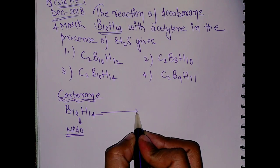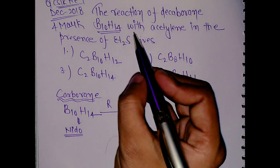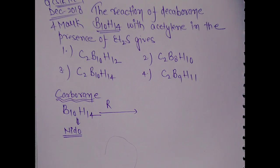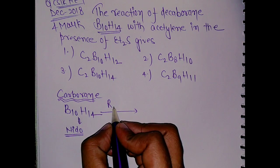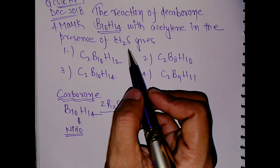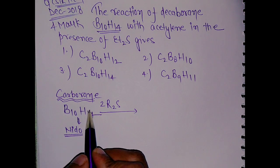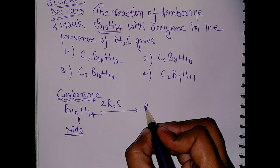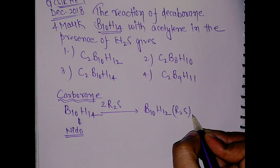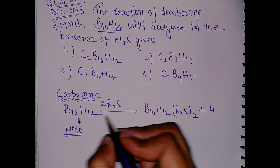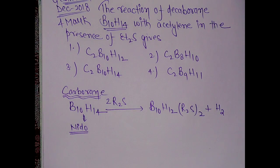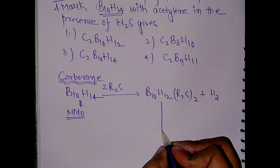Now, if we treat B₁₀H₁₄ with R₂S — I'm taking a general R group, which can be methyl, ethyl, or propyl — I'm taking two moles of R₂S because I need to remove two hydrogens. So it will become B₁₀H₁₂, with two hydrogens removed as H₂ gas, and the R₂S groups come in.